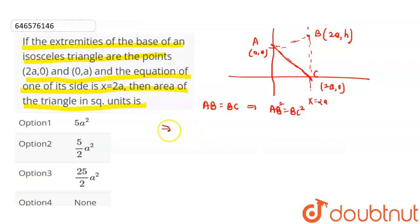Therefore, applying the square: 2a minus 0, that is 4a square plus h minus a whole square under root, which is equal to h square. BC equals h, so BC square equal to h square.